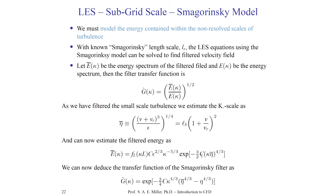Smagorinsky deduced from this form the Smagorinsky filter, applied to filter the energies between the filtered and total spectrum. He writes G-hat(kappa) — the Fourier transform of the filter — as e to the negative (3/4)C times kappa to the 4/3 times eta-bar to the 4/3 minus eta to the 4/3. Here eta-bar is the filtered Kolmogorov scale and eta is the actual Kolmogorov scale. This is the essence of the Smagorinsky model used in practice and in the majority of LES codes in production.